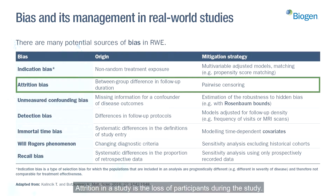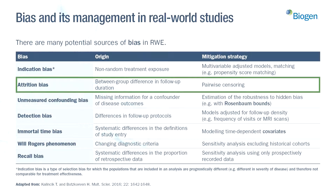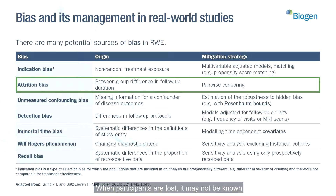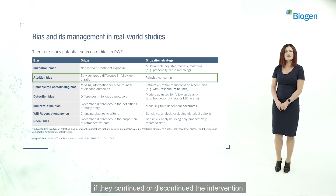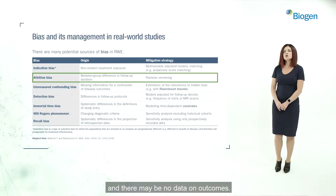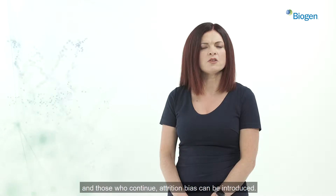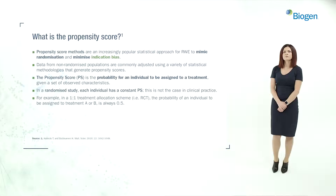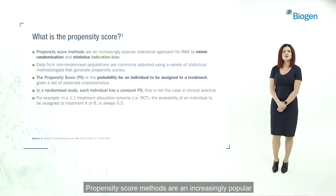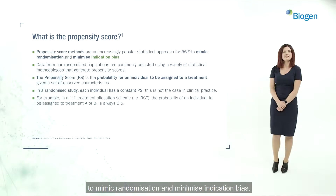Another common type of selection bias is attrition bias. Attrition in a study is the loss of participants during the study. When participants are lost, it may not be known if they continued or discontinued the intervention, and there may be no data on outcomes. If there are systematic differences between people who leave the study and those who continue, attrition bias can be introduced. Propensity score methods are an increasingly popular statistical approach for real-world evidence to mimic randomisation and minimise indication bias.